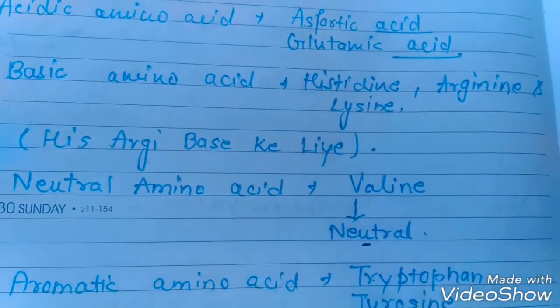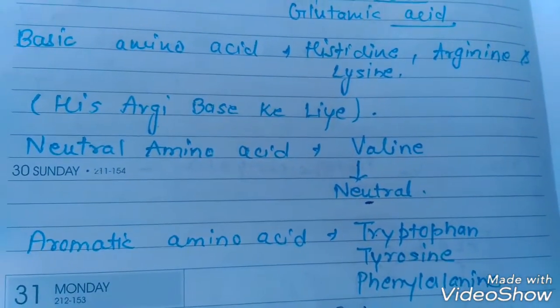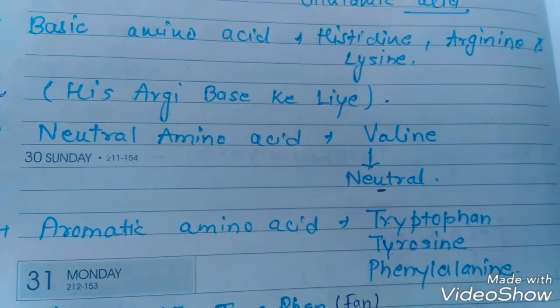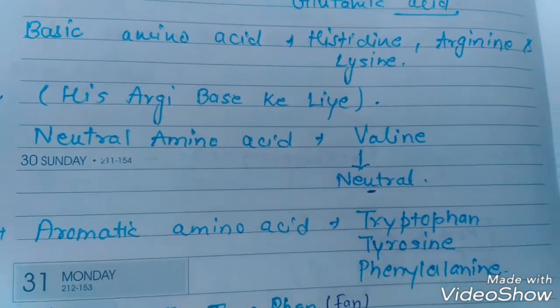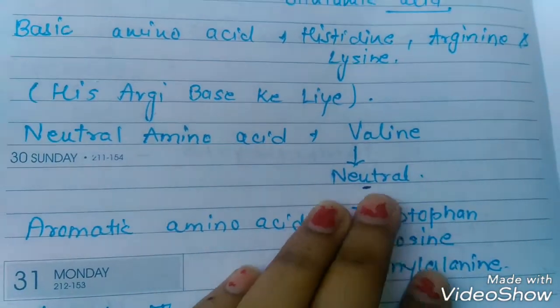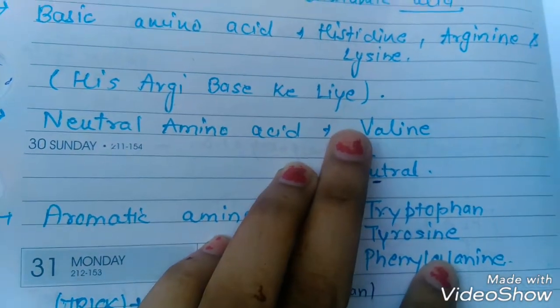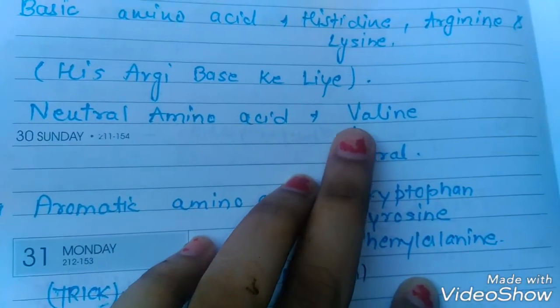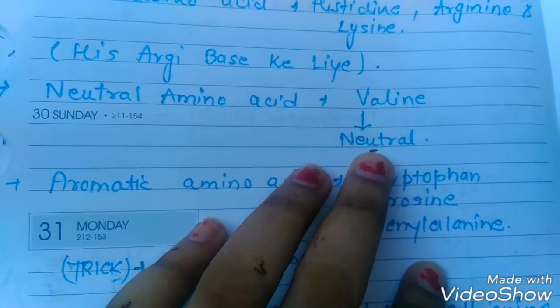Next we have neutral amino acids. An example is valine. We can remember this because 'U' in neutral and 'V' in valine are similar letters, so we can remember it clearly.